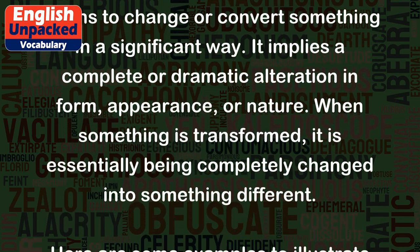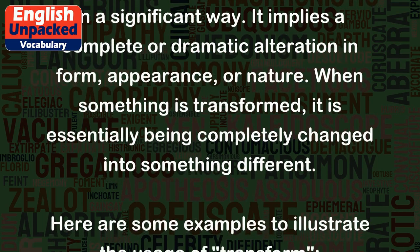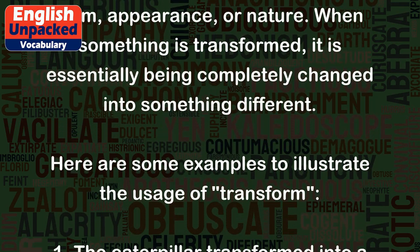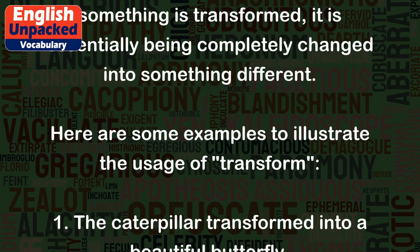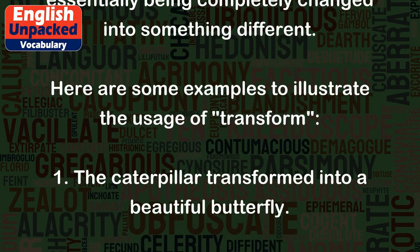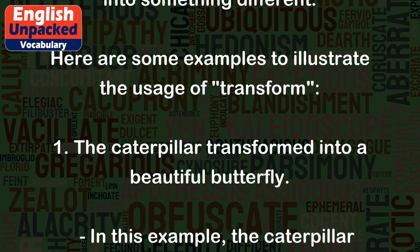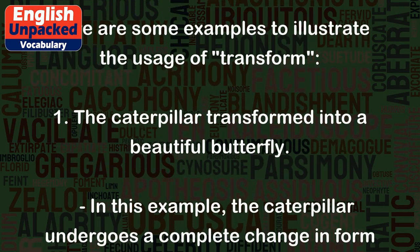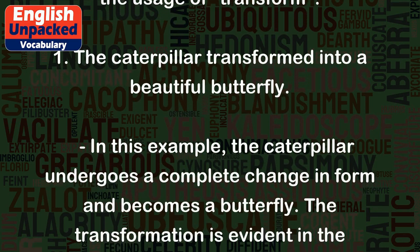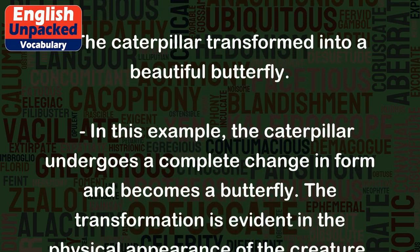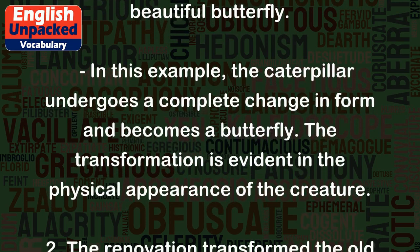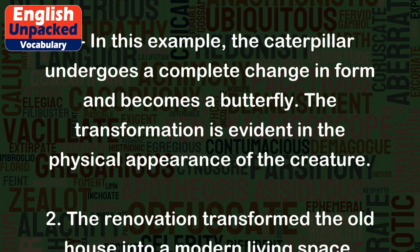When something is transformed, it is essentially being completely changed into something different. Example 1: The caterpillar transformed into a beautiful butterfly. In this example, the caterpillar undergoes a complete change in form and becomes a butterfly. The transformation is evident in the physical appearance of the creature.